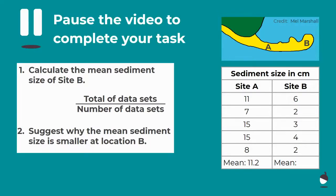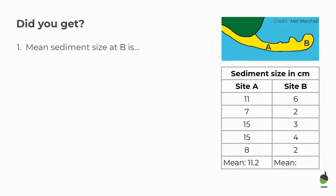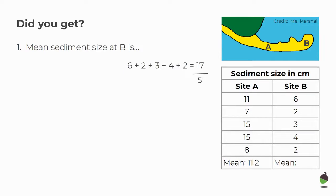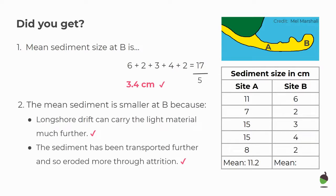Pause the video and complete your task. The mean sediment size at B: first we had to add up all those data sets — 6, 2, 3, 4 and 2 — giving us a total of 17. We divided it by the sample size of 5, giving us a mean of 3.4 centimetres. For question two, the sediment size is smaller at B because longshore drift can carry the light material much further, and the sediment that has been transported further is likely to have been eroded more through attrition. So by the time the sediment has got to B, there's been more time for erosion and the sediment particles are smaller.